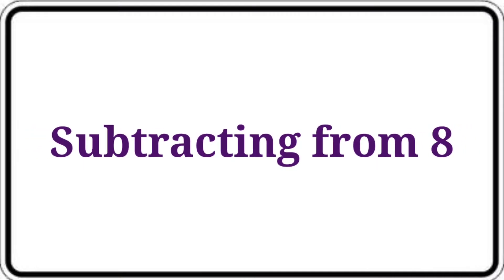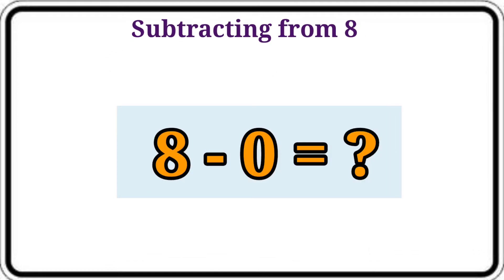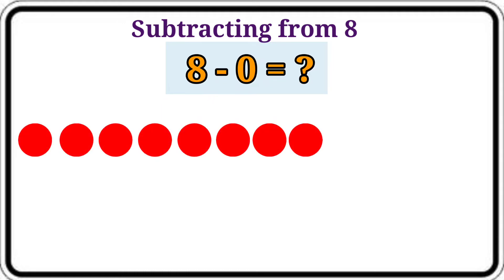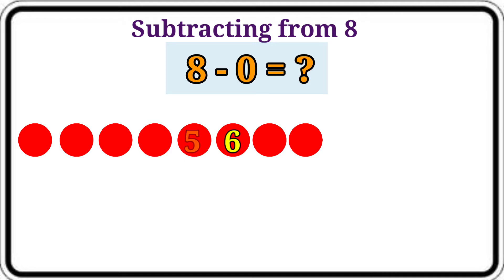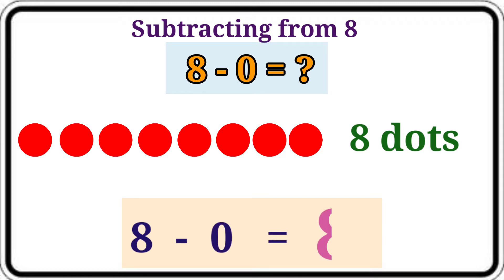Subtracting from 8. The question is 8 minus 0. Let us count the dots that are not crossed: 1, 2, 3, 4, 5, 6, 7, 8. Here 8 dots. Let's write them. Subtraction fact: 8 minus 0 is equal to 8.